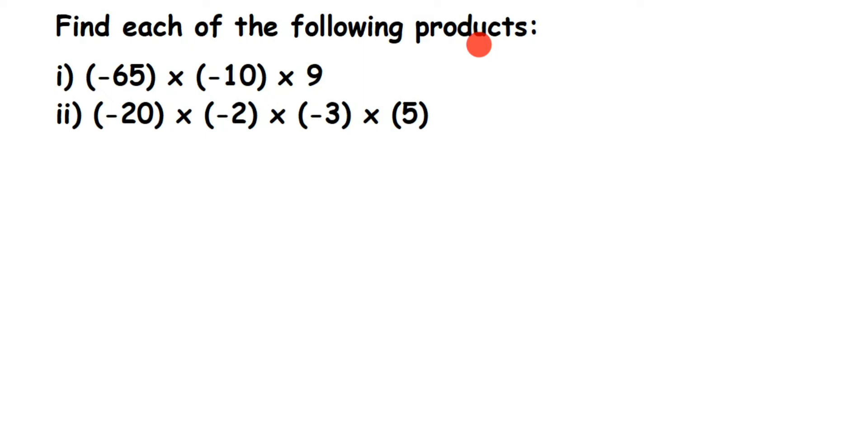The only thing is we have to be careful while multiplying with negative signs. So let's start the first one. Here is the solution and here is the first equation: (-65) × (-10) × 9. First I'm going to multiply the first two numbers - you can multiply all three together, it's completely up to you.